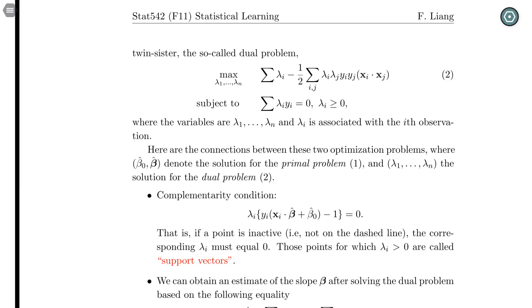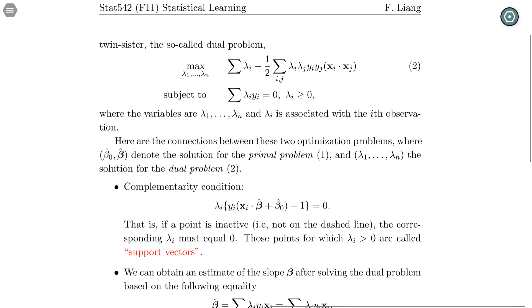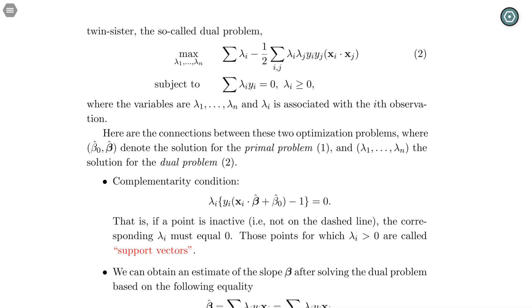Interesting thing about the dual problem is a lot of this lambda is actually going to be zero because of the following complementarity condition. The complementarity condition is part of the KKT conditions and it states that lambda_i and the constraint cannot be non-zero simultaneously.